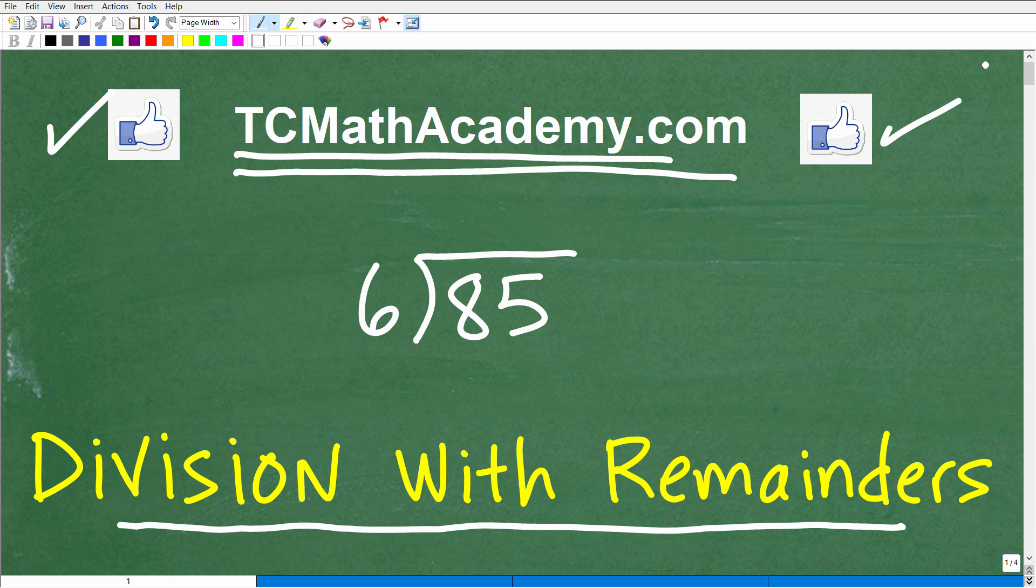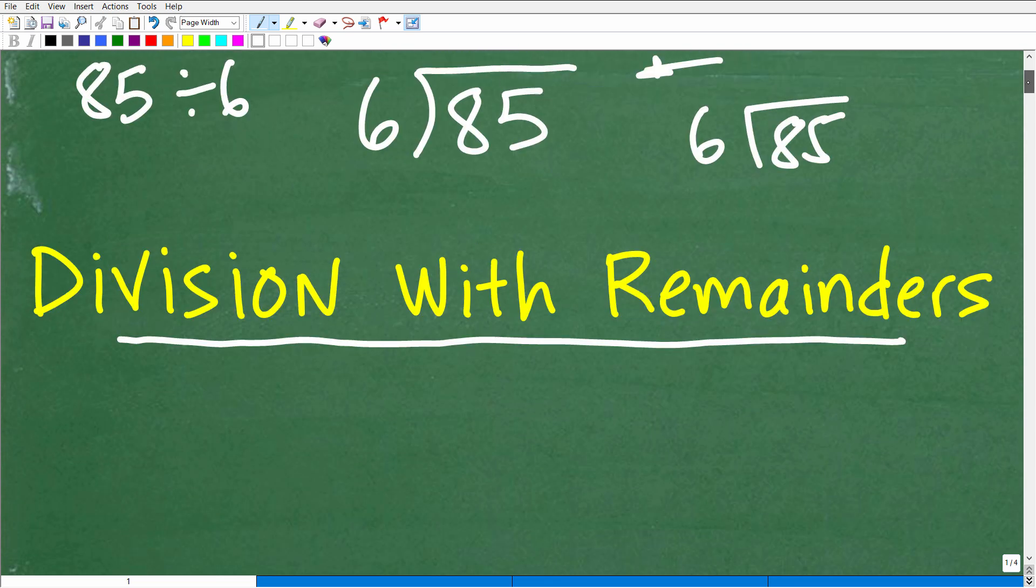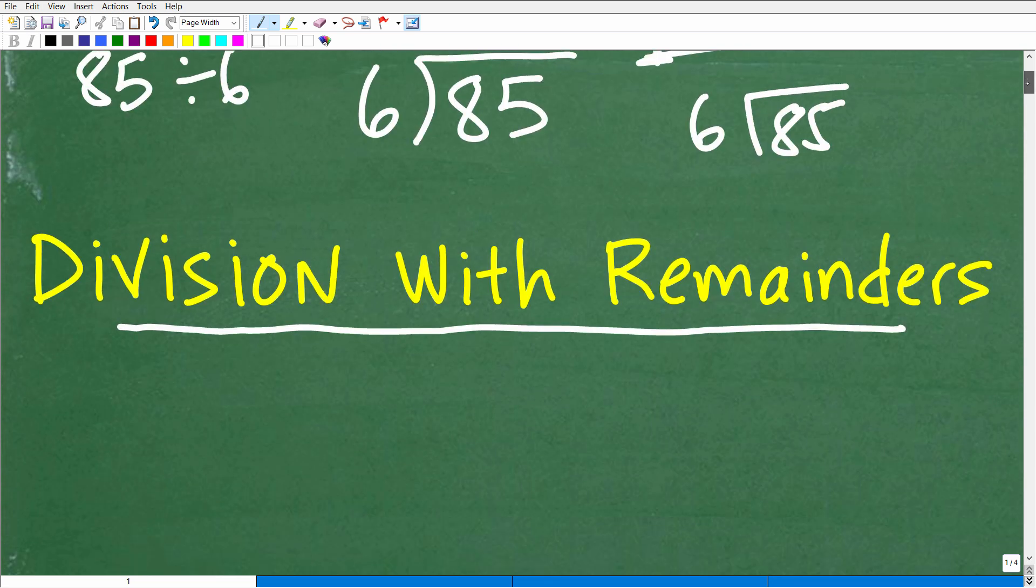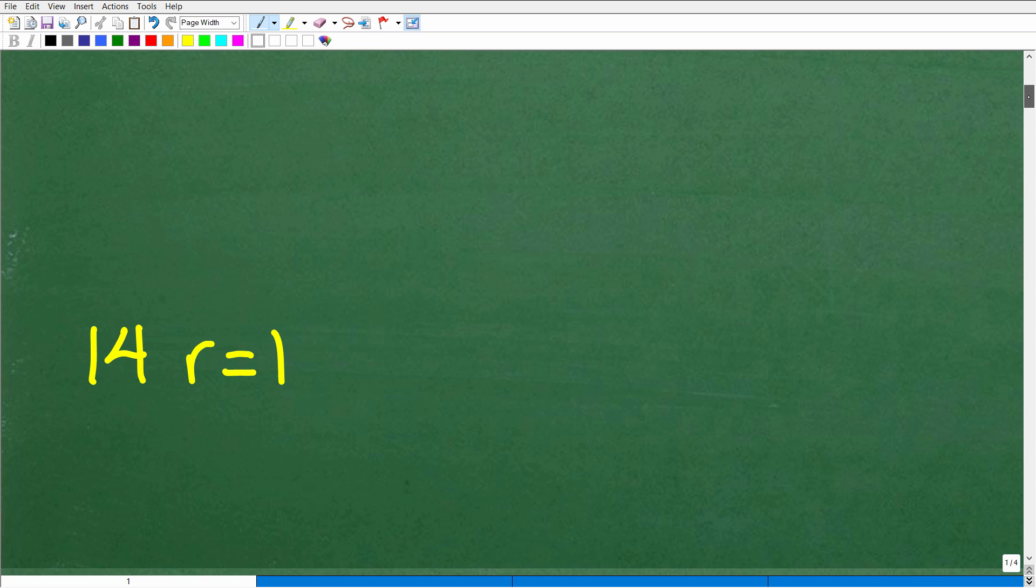So 85 divided by 6. Stylistically it could be written this way, and it could even be written this way, 85 divided by 6.